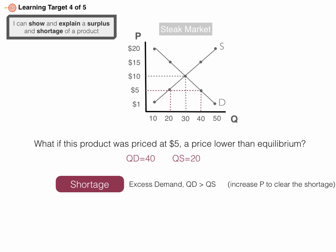Forty people want to buy steaks, but only 20 get made—there's excess demand. To clear this situation, the price would have to increase.